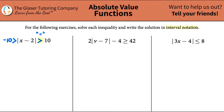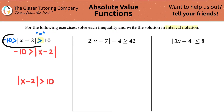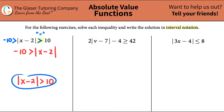Now we have our two equations. We have: negative 10 is greater than the absolute value of x minus 2, and the absolute value of x minus 2 is greater than 10. It's super important that you have it in this notation — literally copy the sign as you see it, and you won't make any mistakes. Now we're ready to do the math for both equations, just like we did with an equal sign. Once you have the two equations, you can get rid of the absolute value signs.